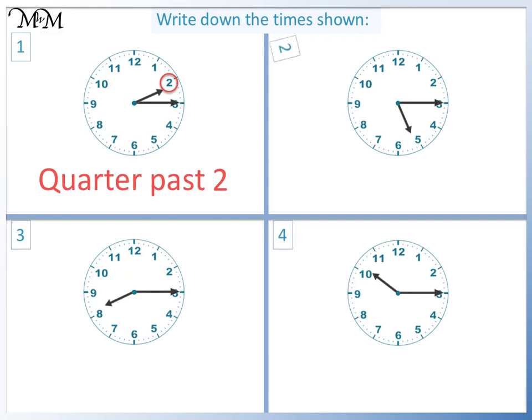Question two. The minute hand is pointing to three, which is quarter past. The hour hand is just past five. So, the time is quarter past five.